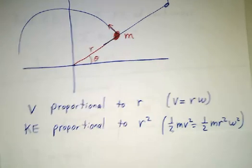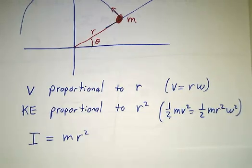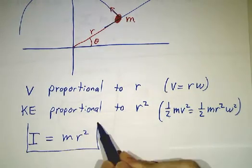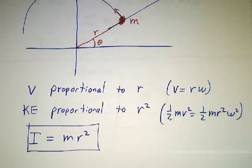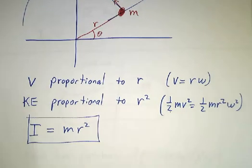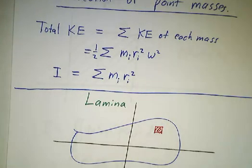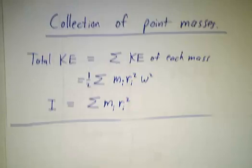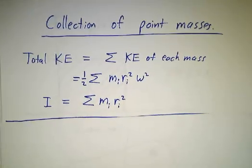So that tells us what the moment of inertia is of a single mass. It's just the mass times the distance squared. Great, that's for one mass. What if you had a whole collection of masses? So you had 37 different points and you're rotating all of them.